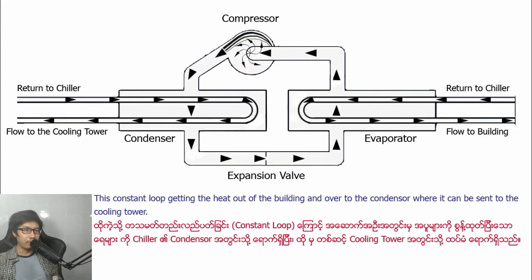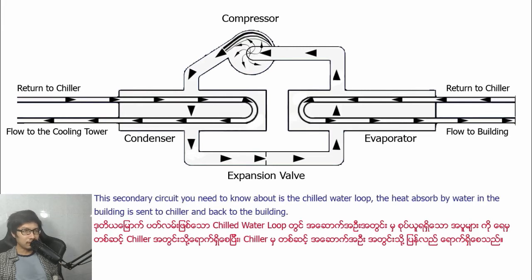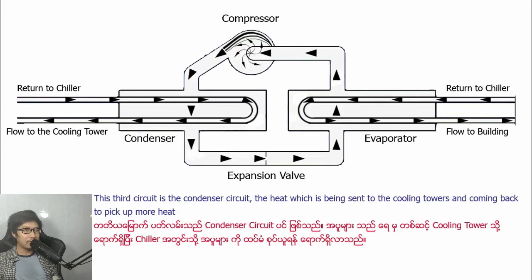The refrigerant constantly gets the heat out of the evaporator and over to the condenser where it can be sent to the cooling tower. This secondary circuit you need to know about is the chilled water loop. The heat absorbed by water in the evaporator is sent to the chiller and back to the evaporator again. This third circuit is the condenser circuit.